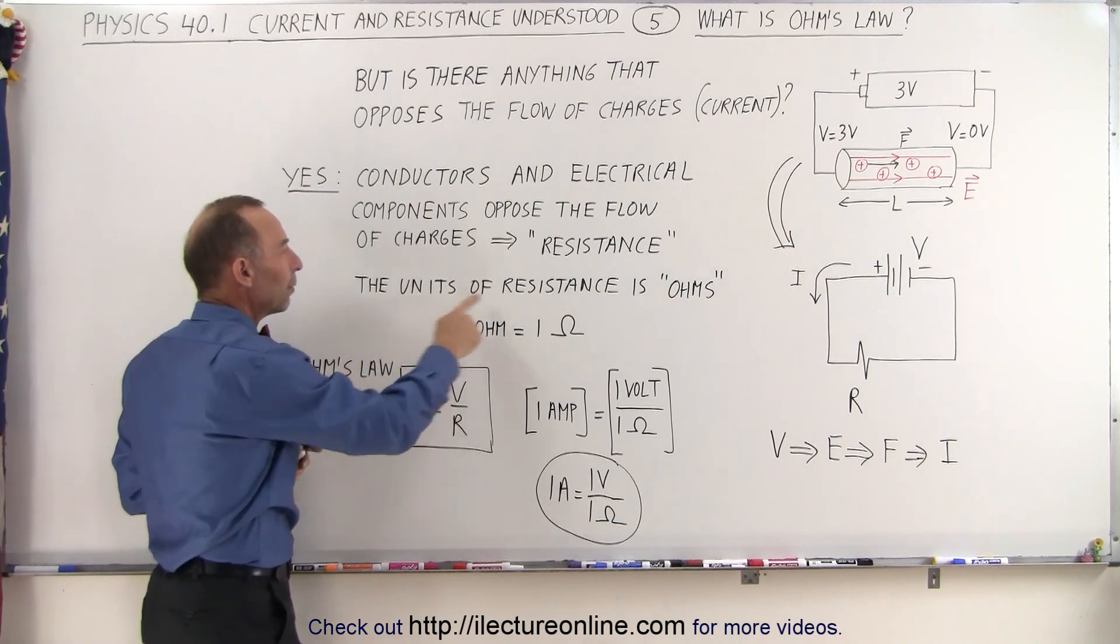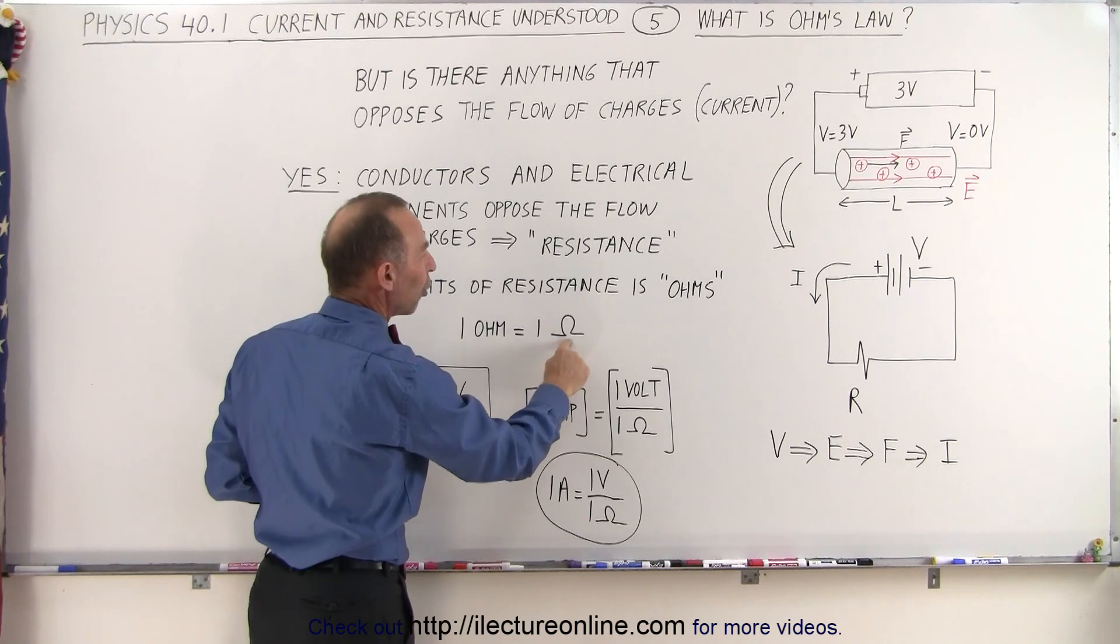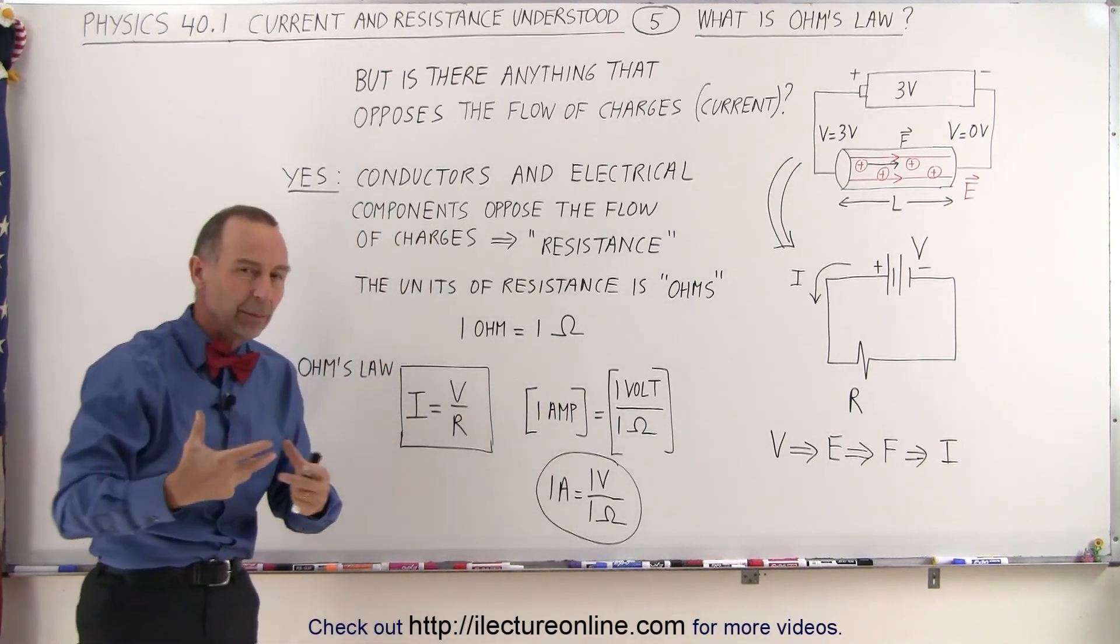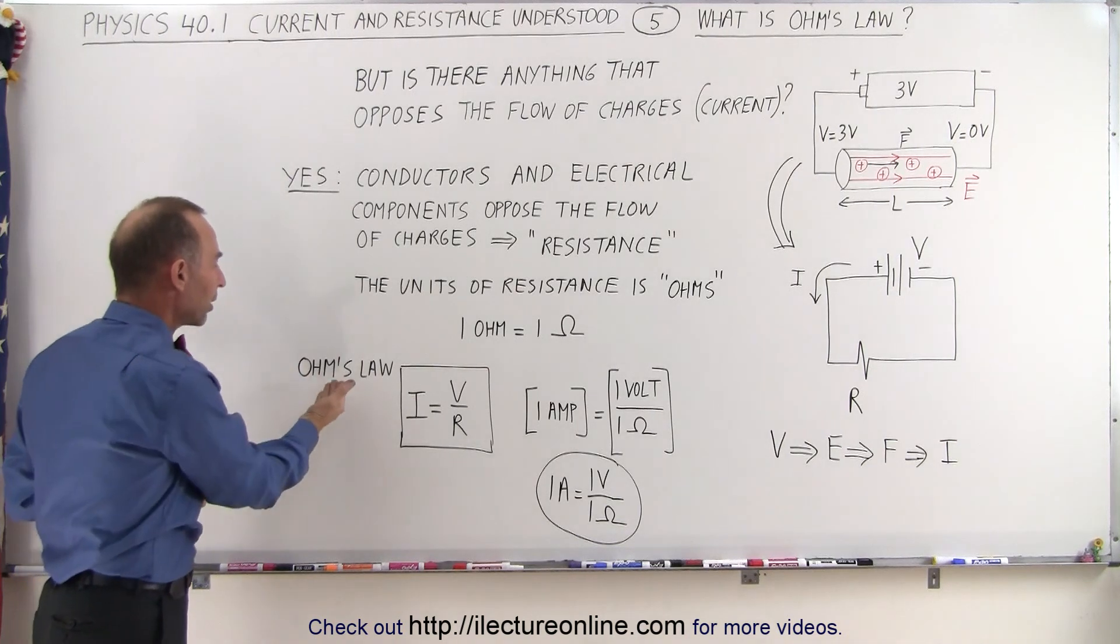The units of resistance is called ohms. One ohm can be written as 1Ω. Omega is the Greek symbol that represents the unit of resistance. And this is where Ohm's Law comes in.